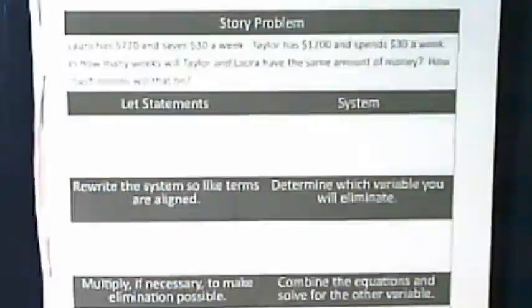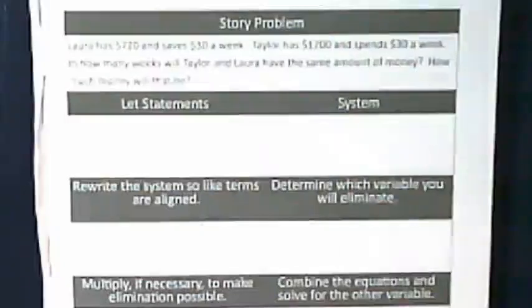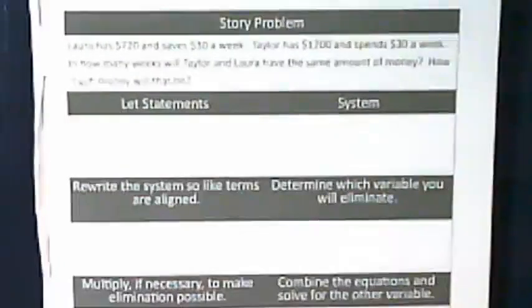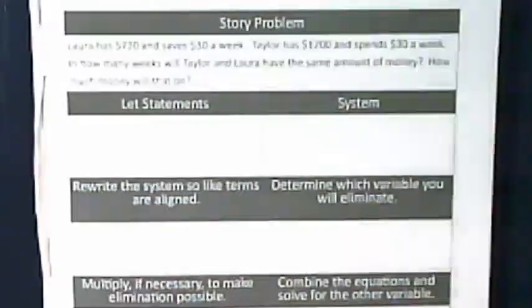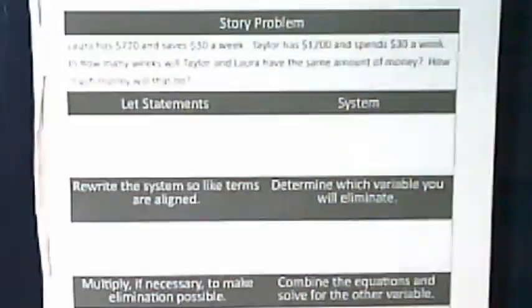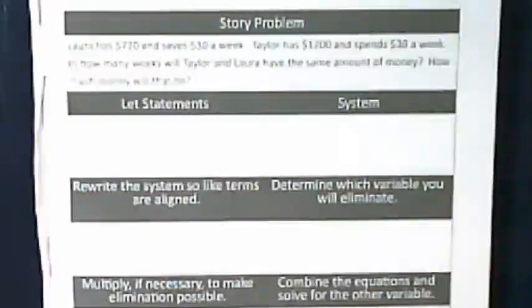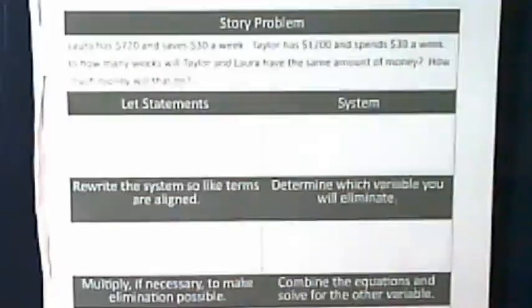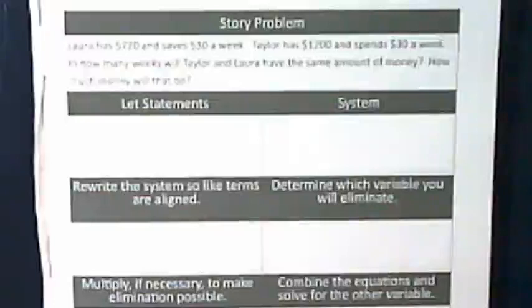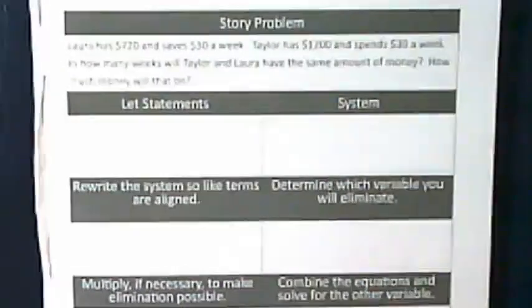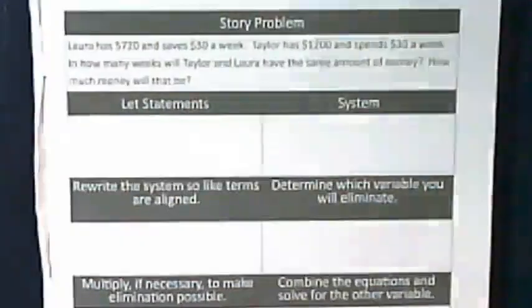So this is an interesting problem because we have Laura who is putting money into a savings account. She's adding $30 a week. Right now she has $720. Is Taylor saving or is Taylor spending? Taylor had been saving and has more money but now is spending down $30 a week. And at some point they're going to end up at the same dollar amount because one's putting in $30 a week and the other's taking out $30 a week. We just want to find out what that is.